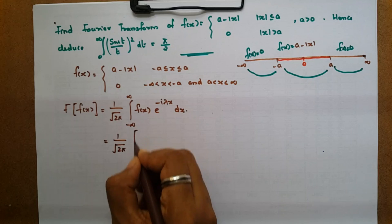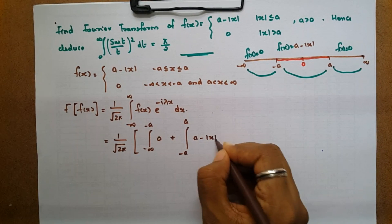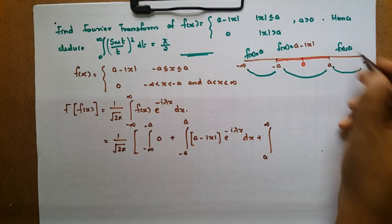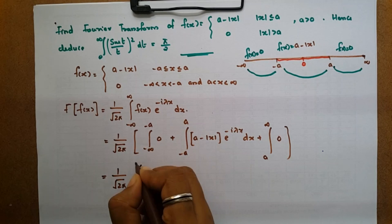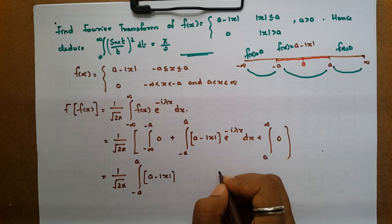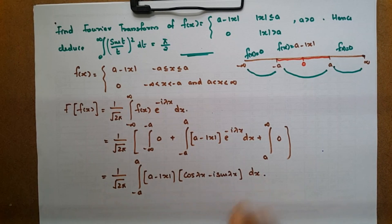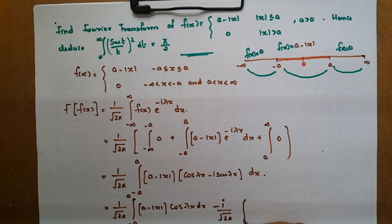This equals 1 by root 2π into: the integral from minus infinity to minus a of f(x) = 0, plus the integral from minus a to a of f(x) = (a - |x|) into e raised to minus iλx dx, plus the integral from a to infinity of f(x) = 0. Now expanding e raised to minus iλx as cos λx minus i sin λx, we split into: 1 by root 2π times the integral from minus a to a of (a - |x|) cos λx dx, minus i by root 2π times the integral from minus a to a of (a - |x|) sin λx dx.